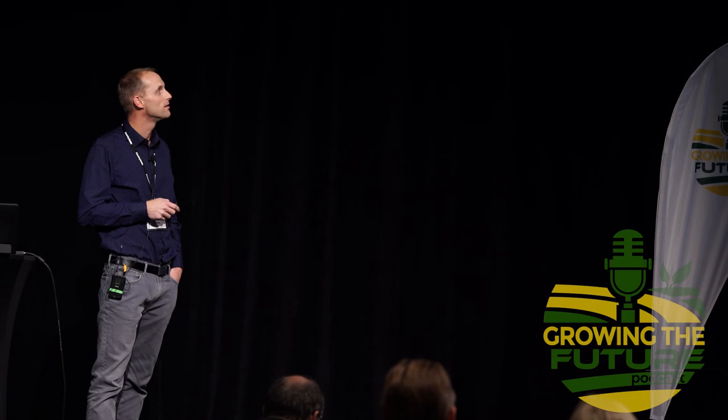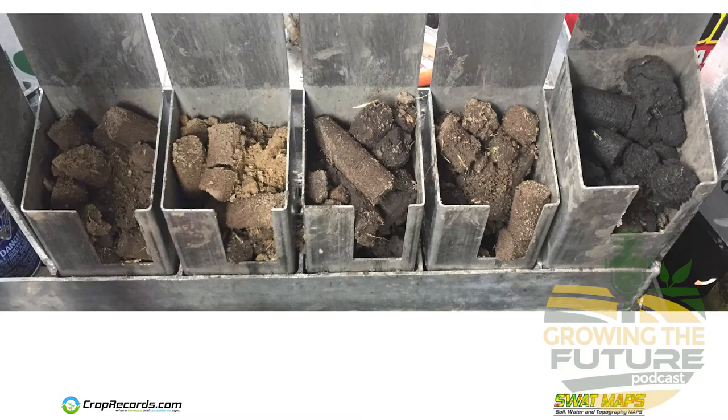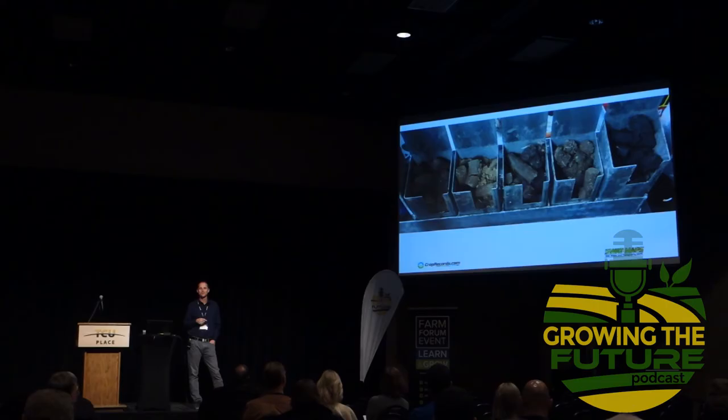Here's another one — beach sand all the way to a peat depression, with 1.5% organic matter at one end up to about 18% at the other. And not only that, but that 18% is in a wetter part of the field. How much is a dry sandy hill with 1.5% organic matter going to mineralize for nitrogen through a season, compared to an 18% peat in a wet part of the field? Big difference.